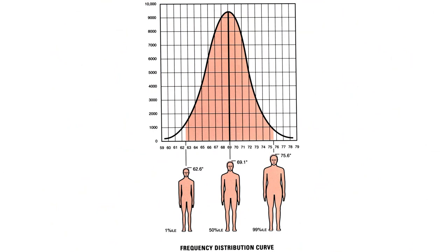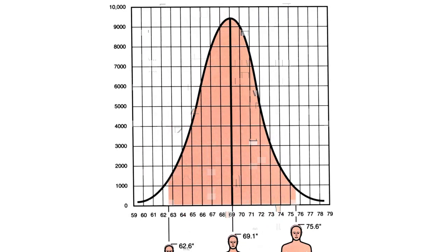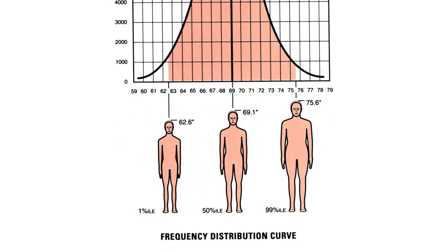We also consider frequency distribution curves. In this example, you can see we have a 50th percentile in the center, so the average person. But what constitutes an average, and how do we gather data from that? In this curve, you can see we're looking at the amount of people that might fit. We're trying to reach the most amount of people in our design. So how many people would fit under that bell curve?